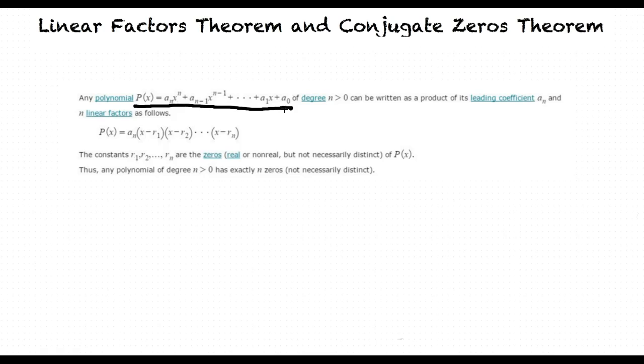The constants r sub 1, r sub 2, to r sub n are the zeros of P of x, and these zeros can either be real or nonreal, and they don't necessarily need to be distinct. Thus, any polynomial of degree n greater than zero has exactly n zeros.